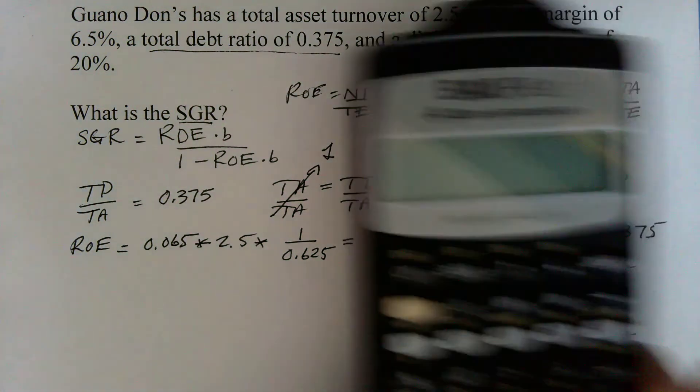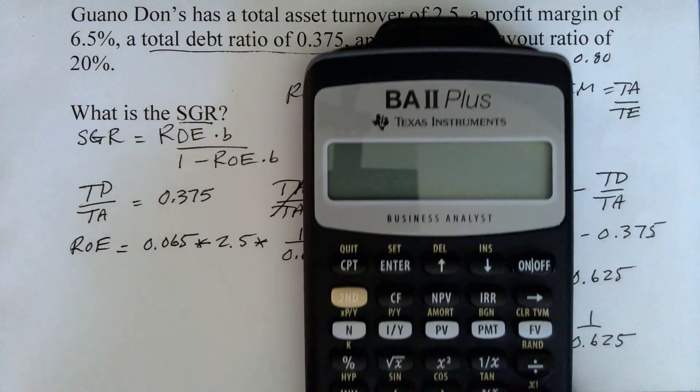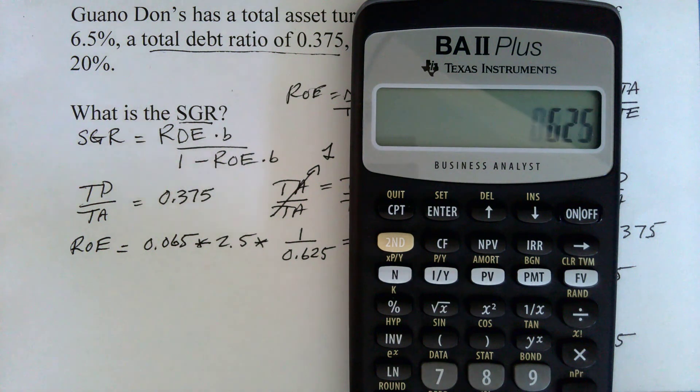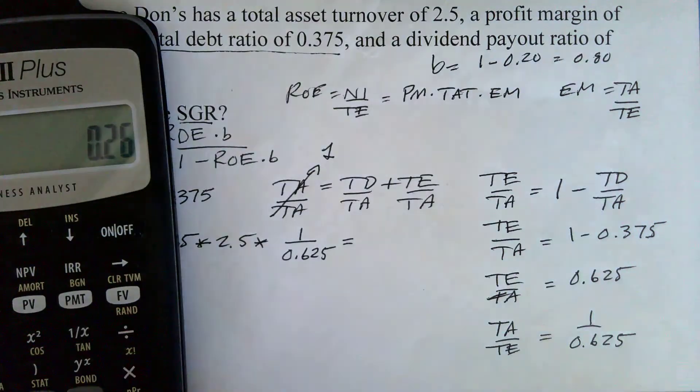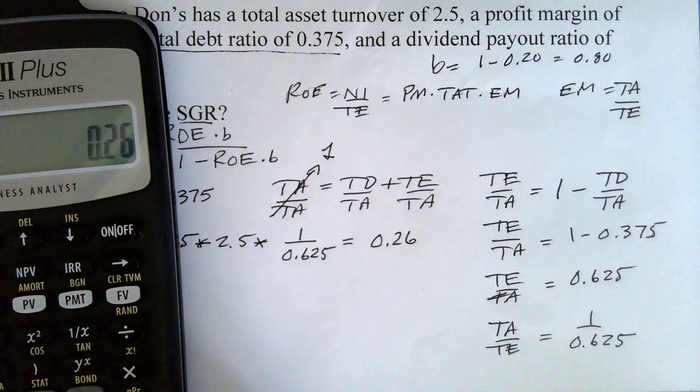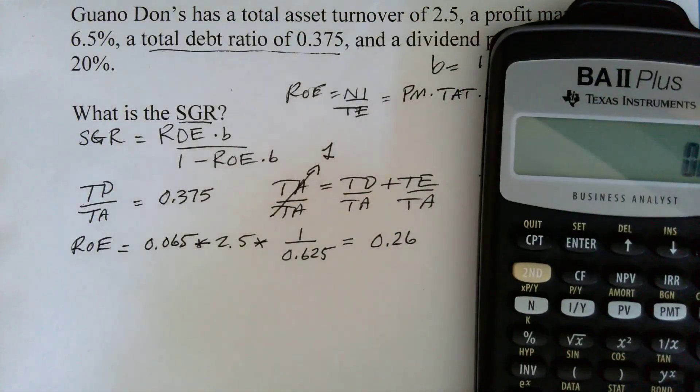So we can go ahead and say that ROE is equal to the profit margin, which is 6.5% 0.065 multiplied by the total asset turnover of 2.5 multiplied by the equity multiplier, which is just 1 divided by 0.625. So we get out our calculator and we say 0.065 times 2.5 divided by 0.625. And that gives us 26%, but of course we leave it as a decimal.